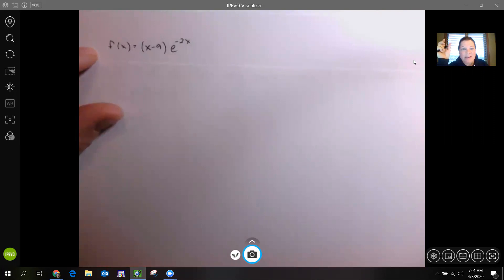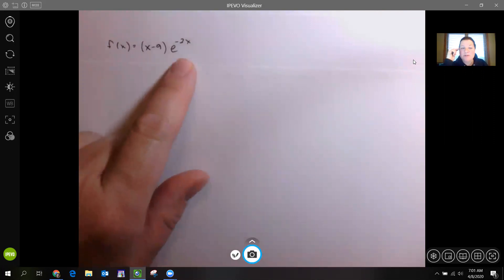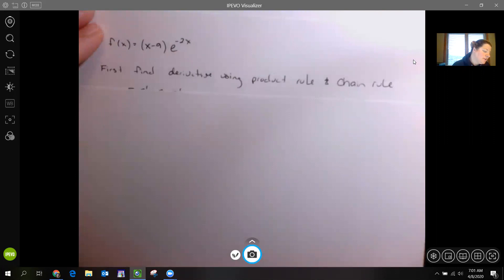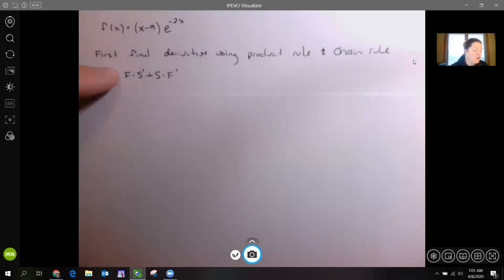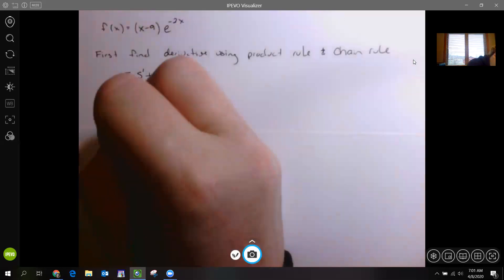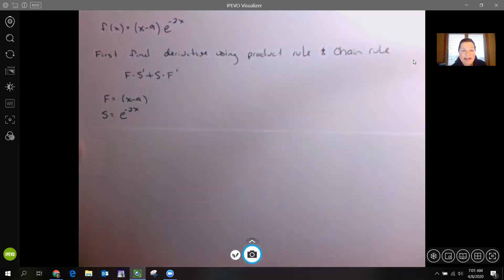But this is a product rule and a chain rule, so the derivative is a little bit harder. First, you have to find that derivative using the product and the chain rule. Remember, the product rule is first times the derivative of the second plus the second times the derivative of the first. Our first is that first part you're multiplying, so that's X minus 9. The second is e to the negative 2x.